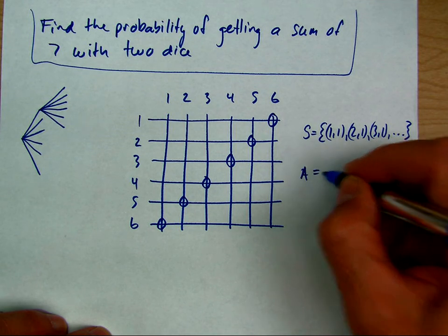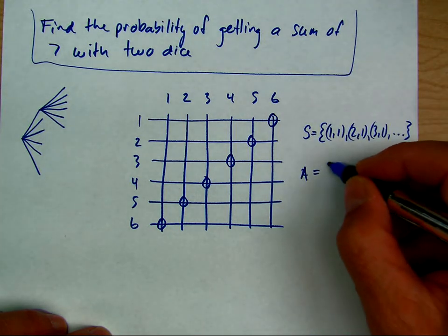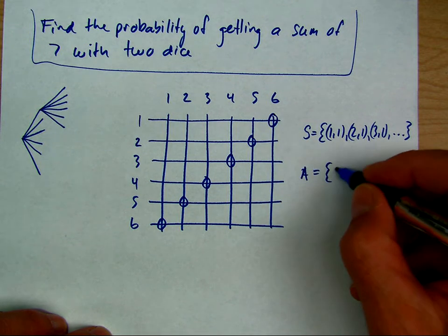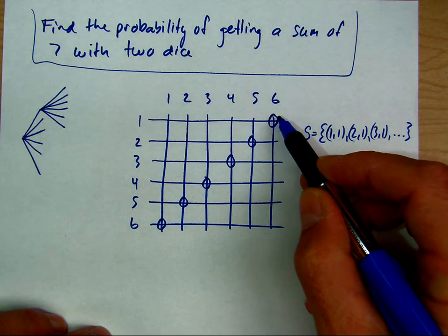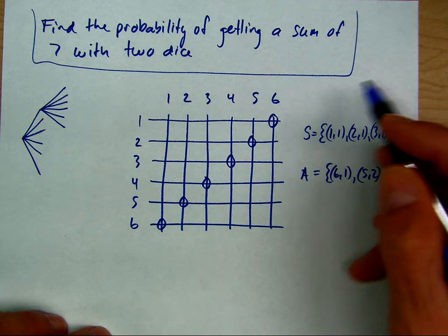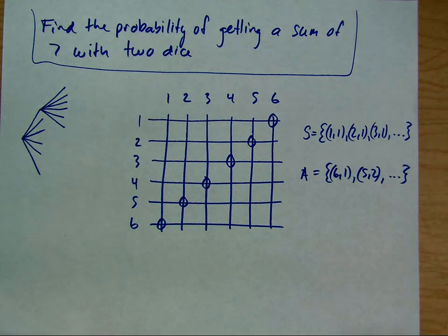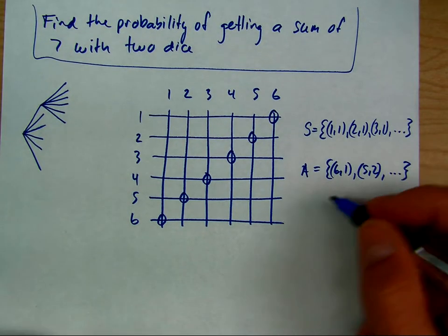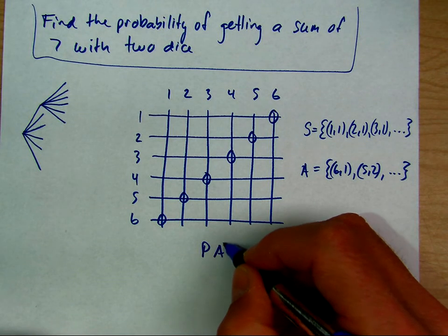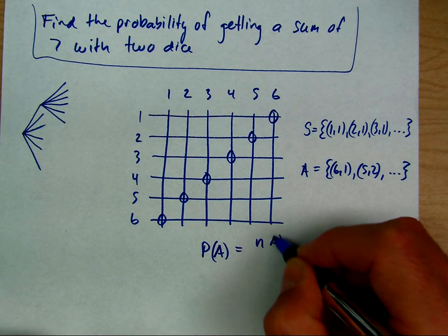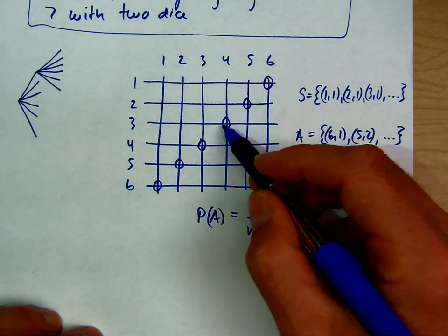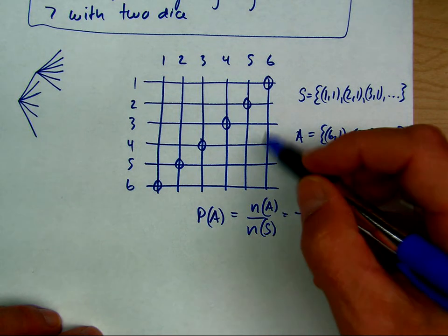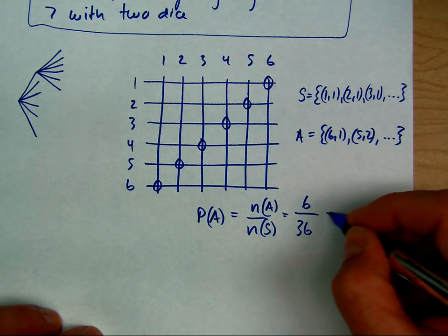Event A is having a sum of seven. The set includes the six outcomes: six-one, five-two, four-three, three-four, two-five, one-six. The probability of A is the number in A divided by the number in S. The number in A is six, the number in the sample space is 36, so we get one over six.